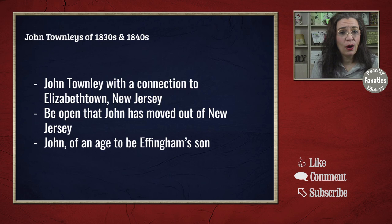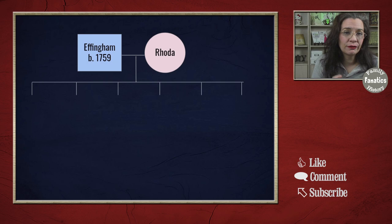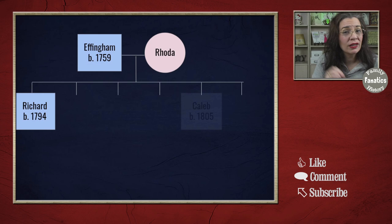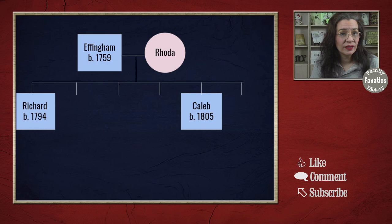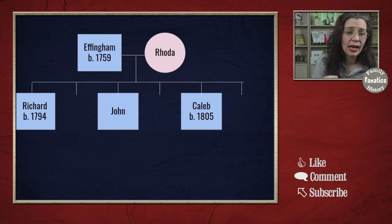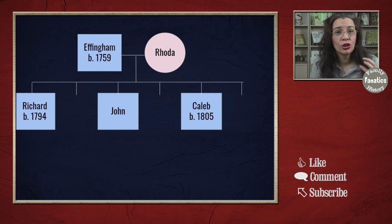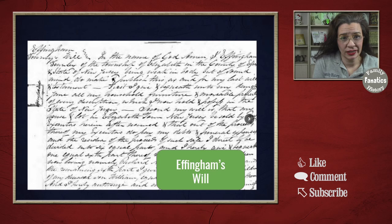In order to establish a birth year, I need to look at Richard Townley, who I have definitively proven as the son of Effingham, and I know his birth date, as well as Caleb, another son named on that will who I have definitively proven is the son of Effingham Townley. I need to piece together when they were born and utilize their birth dates to help figure out one for John. In the will of 1828, Effingham's children are listed in the following order: Richard, Abby, John, Jane, and Caleb.